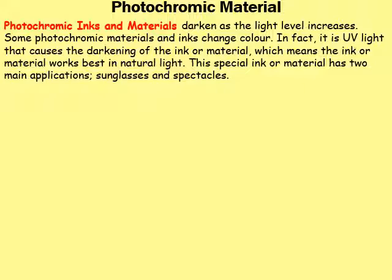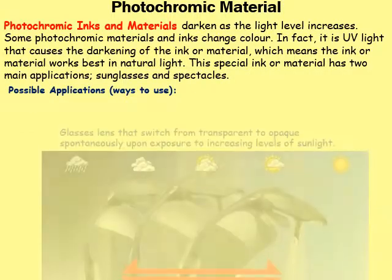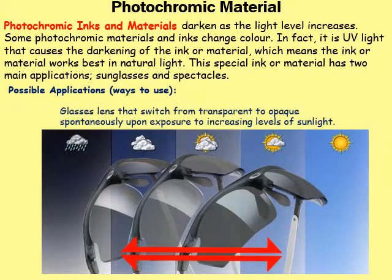The special ink or material has two main applications — things like sunglasses and spectacles. The example here is a pair of sunglasses: when you go outside they haze over and become shaded, and when you're inside they go clear. They are actually quite common if you have very sensitive eyes and need to wear sunglasses frequently. Obviously they're more expensive than normal sunglasses because they have this specialist smart material built within them.